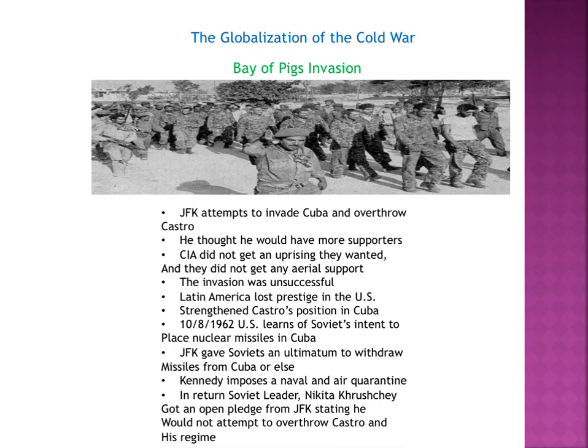JFK attempted to invade Cuba and overthrow Castro. They planned a secret attack — the CIA trained and armed Cuban refugees, flew them back into Cuba, wanting them to get support and overthrow Castro. But the support was not there when they got there, which threw them off guard. The CIA did not get an uprising the way they wanted, did not get aerial support, and the invasion was totally unsuccessful.